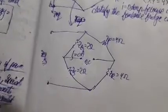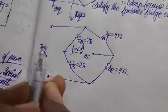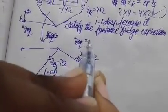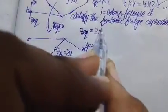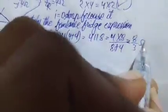Now it is quite easier to find out this Z equivalent. You just need to add 2 plus 2, which is in parallel with 4 plus 4. That gives 4 in parallel with 8, which equals 4 into 8 divided by 8 plus 4, which is equal to 8 by 3 ohm.